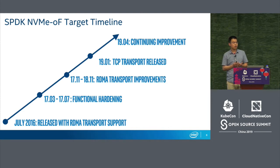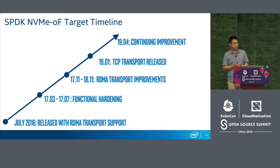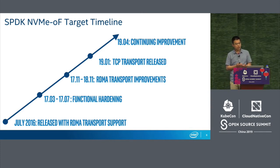We have PCIe SSD hardware and we can transition from SCSI to NVMe protocol. In order to better serve remote access and provide better service for NVMe protocol, we have NVMe fabrics. This is the history.